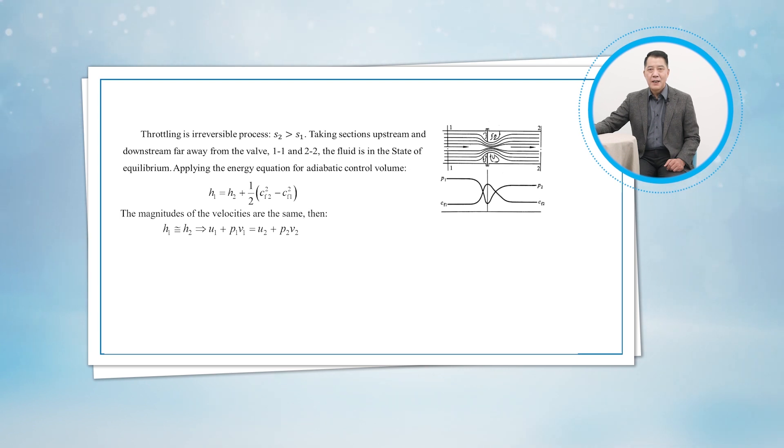Thus, the final outcome of a throttling process depends on which of the two quantities increases during the process. If the flow energy increases during the process, it can do so at the expense of the internal energy. As a result, internal energy decreases, which is usually accompanied by a drop in temperature. If the product PV decreases, the internal energy and the temperature of a fluid will increase during a throttling process. In the case of an ideal gas, the temperature has to remain constant during a throttling process.